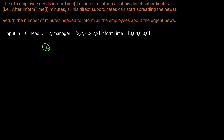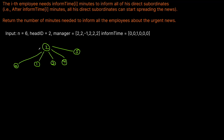Employee 0 has the head of the company as their manager, so employee 0 will have a node pointing to the head of the company. Same with employee 1. Employee 2 is the head of the company, so they don't have a manager. It looks like employees 3, 4, and 5 all report to the head of the company as well. So this is like an n-ary tree with only one level because all of the people just report to the head of the company.